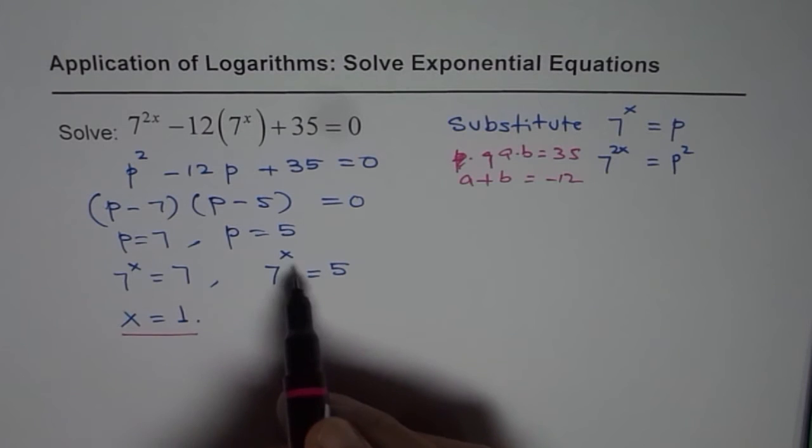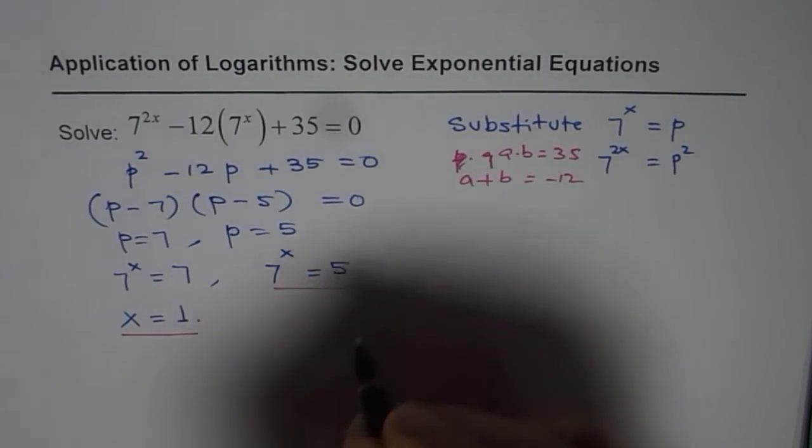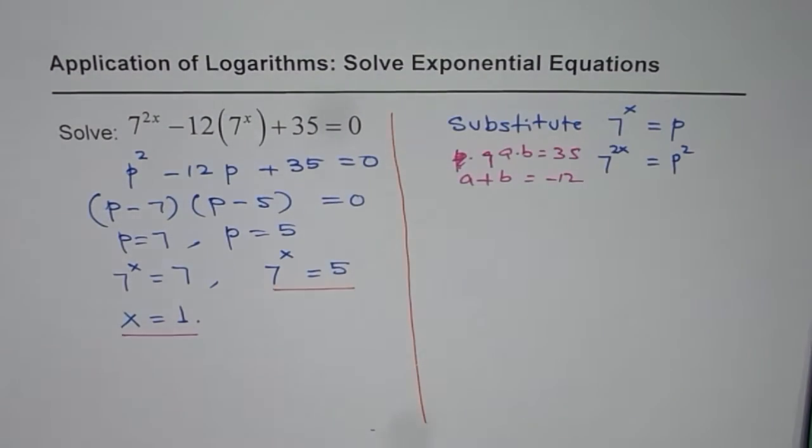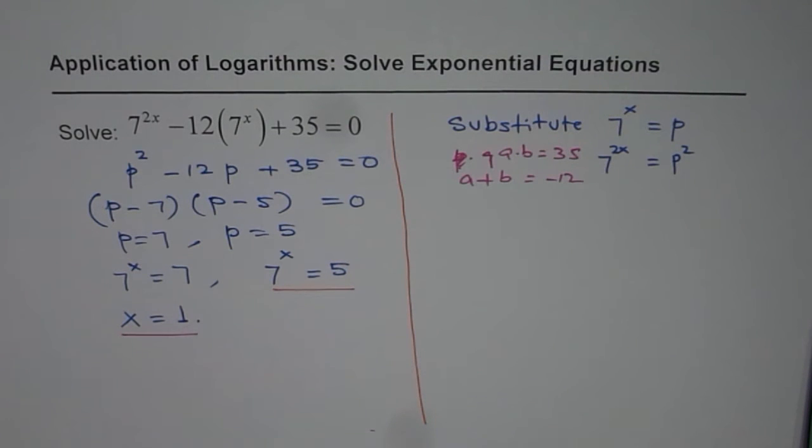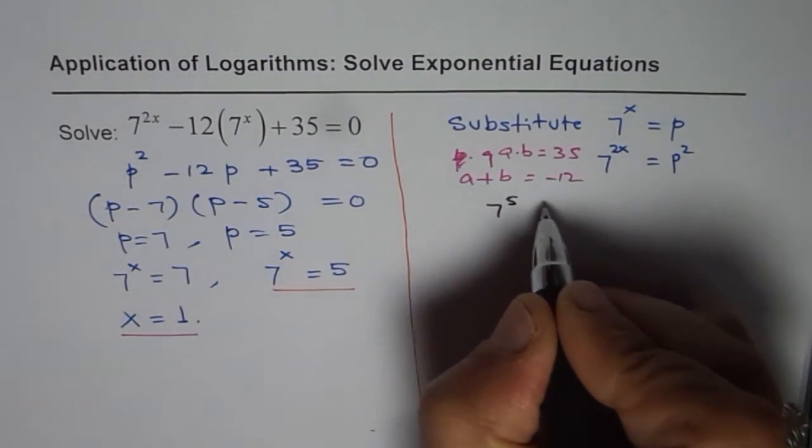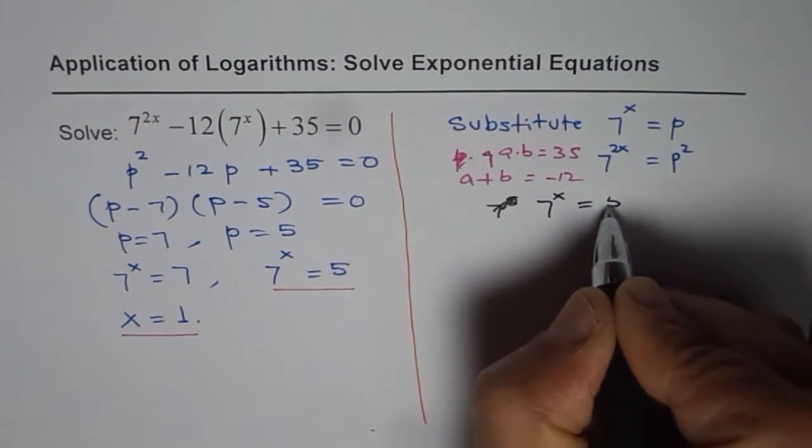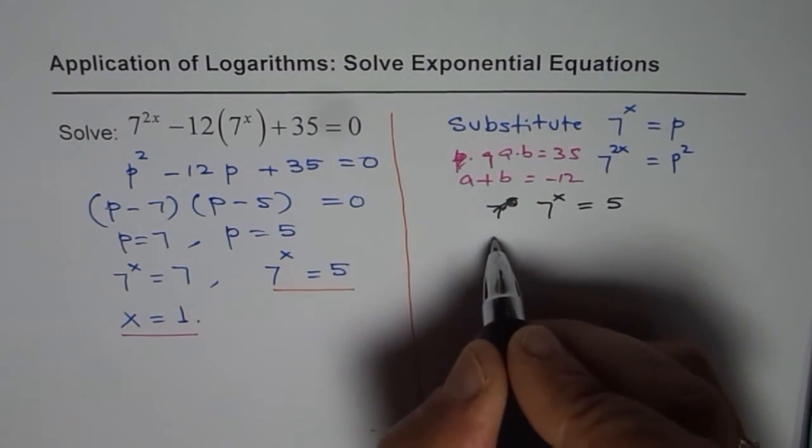So we get one solution clearly from here. The other one is 7 to the power of x is 5. So x indeed is less than 1. Well how much is it? How to find this number? This is what we are going to learn here. So we'll solve this part on the right side. So what we get here is that 7 to the power of x is equals to 5. To solve it we take log on both sides.